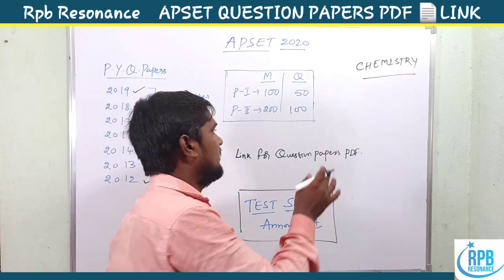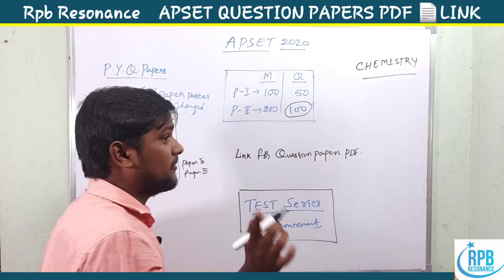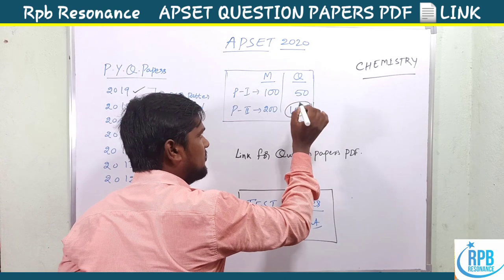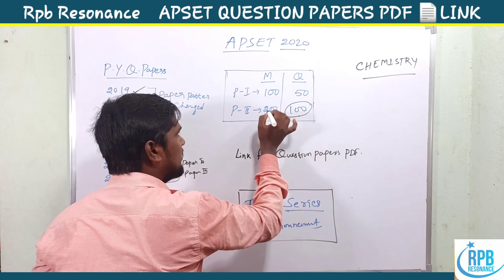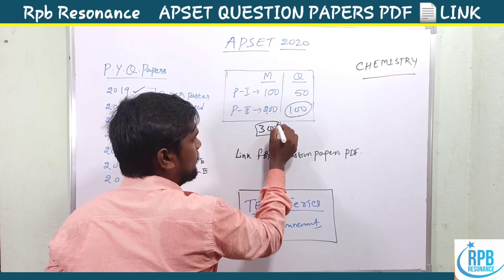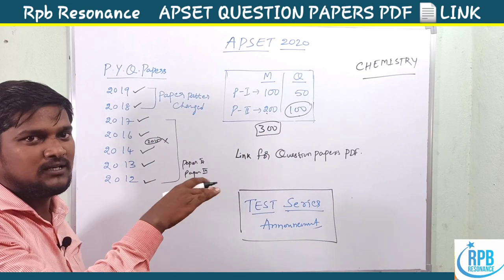From 2018 and 2019, the pattern changed. Paper two now has 100 questions with 200 marks, making the total 300 marks. Check the previous video for more details on cutoffs.